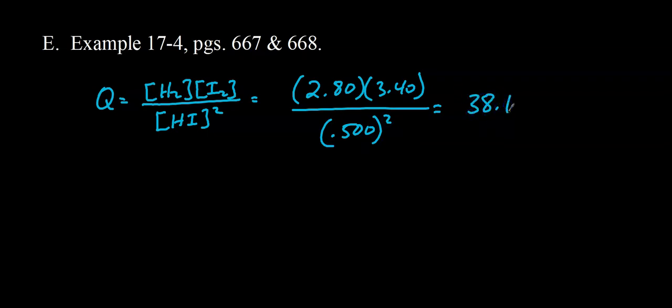And so what we'd end up with is 38.1. So our next step always, and we'll be doing this with QSP and KSPs when we get to solubility product constants in chapter 21 maybe, is to compare the Q to the K. So given to us originally is that the K for this reaction is 65. So Q is smaller than K.